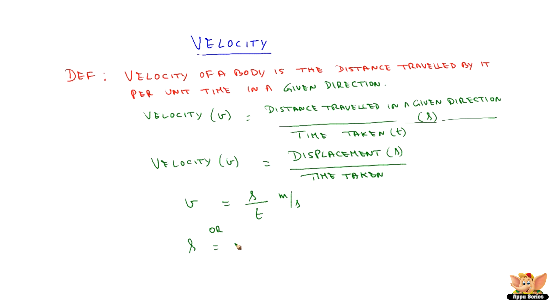Or in other words S is equal to V into T which is meter where V is velocity, S is distance and T is time. Distance is in meter, time is in seconds, so velocity is meter per second.